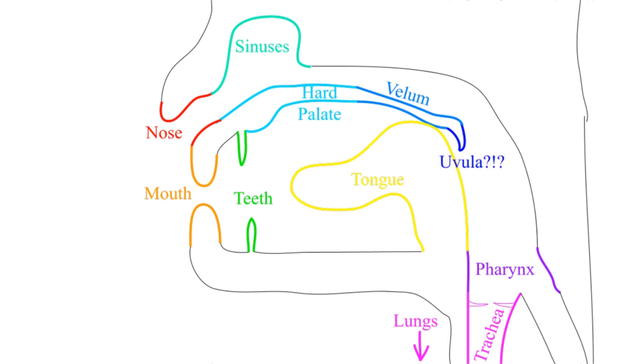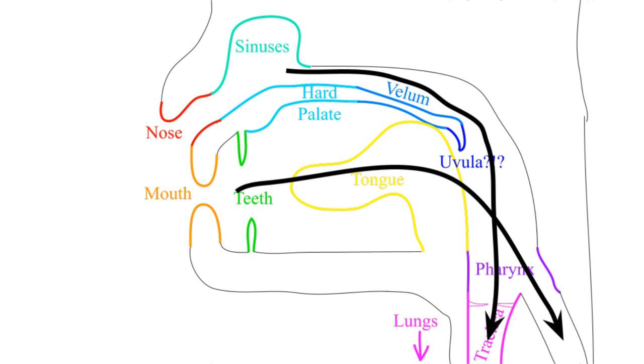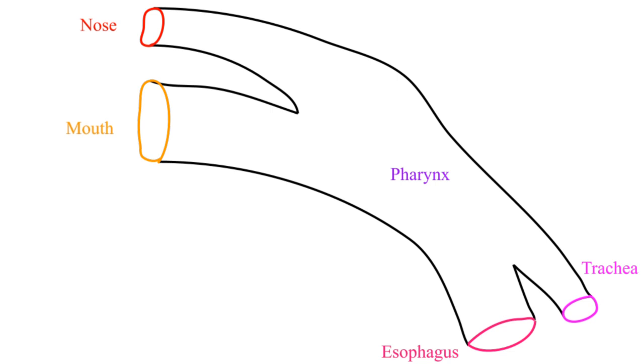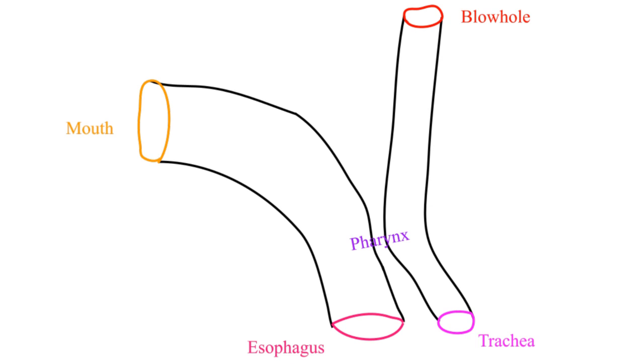Now, the uvula is quite curious because no other animals have it. One theory of its evolution is in order to support speech. The other is to separate the air and food holes, allowing infant humans to breathe while breastfeeding. This is certainly the one dolphins went with. While in humans, the pharynx resembles a tube that splits at both ends, the dolphin pharynx resembles two separate tubes.